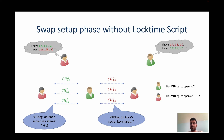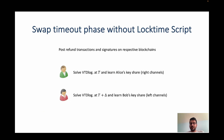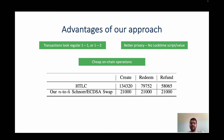The swap lock and swap complete phases are unchanged. The swap timeout phase is triggered as before if the coins remain unswapped. In this case, users brute-force the VTDL commitments and learn the other user's key share, giving them the entire secret key of the channel and allowing immediate refund of the unswapped coins. The advantages of our approach are that transactions now look like regular payment transactions, no information about channel expiry is leaked on-chain since we do not use the locktime script, and on-chain operations are cheap — the gas costs in Ethereum for every phase are lower in our protocol compared to the HTLC-based swap solution.